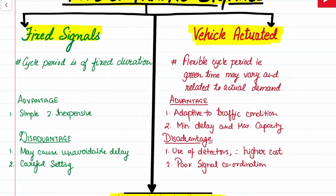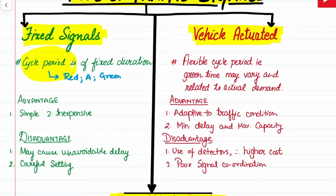Let us first discuss about fixed signals and vehicle-actuated type. In fixed signals, as the name suggests, these signals are fixed — they have a fixed cycle period. This means there will be a fixed time allotted to red light, a fixed time for amber light, and likewise for green light also there will be a fixed time.